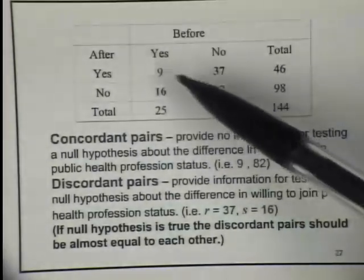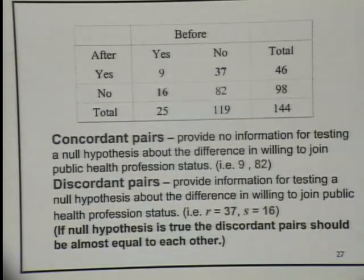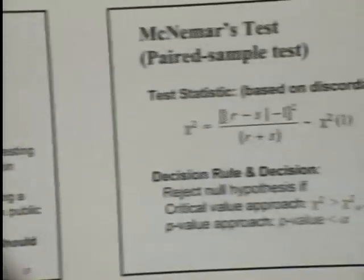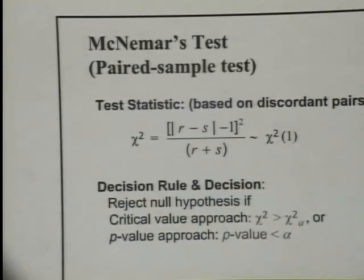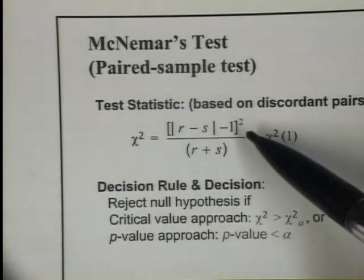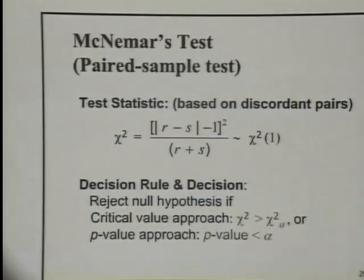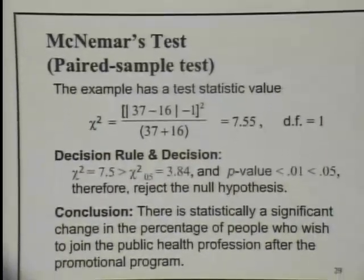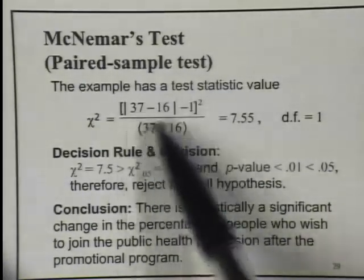We have concordant pairs — the diagonal where no changes occurred (9 and 82) — and discordant pairs on the other diagonal (37 and 16). The McNamara test is based on the difference of the two discordant pair numbers: subtract 1, divide by the total, square the numerator, and divide by r plus s (the sum of the discordant pair). Under the null hypothesis, this statistic follows a chi-square distribution with 1 degree of freedom. You get a chi-square score of 7.505.